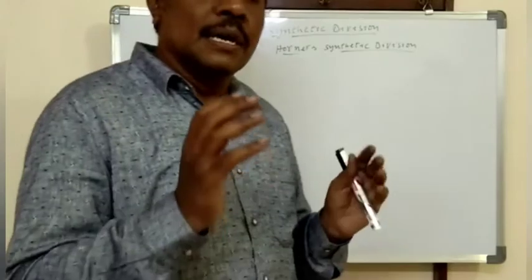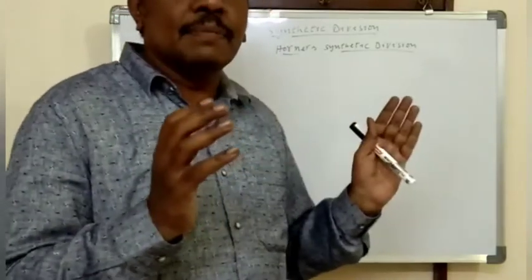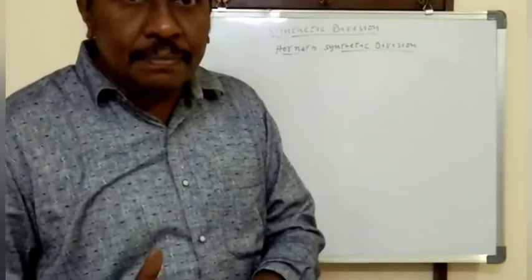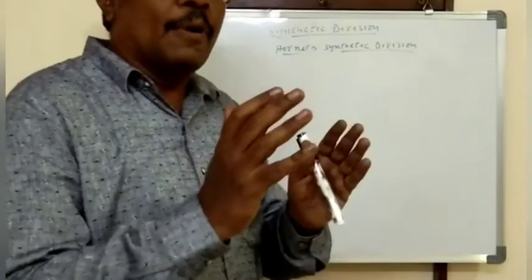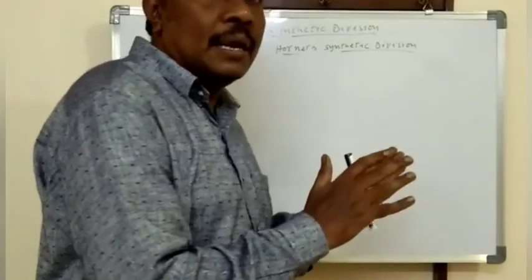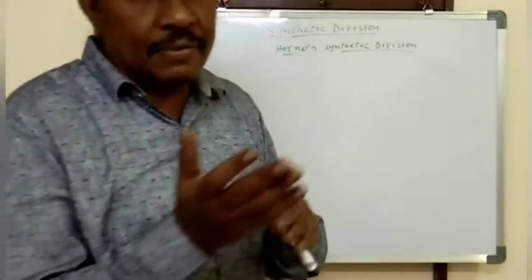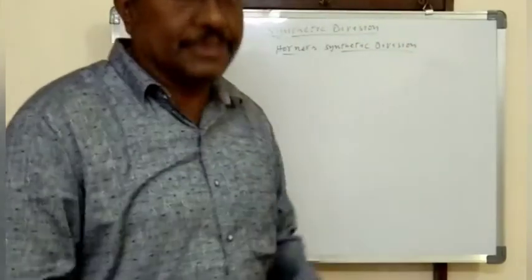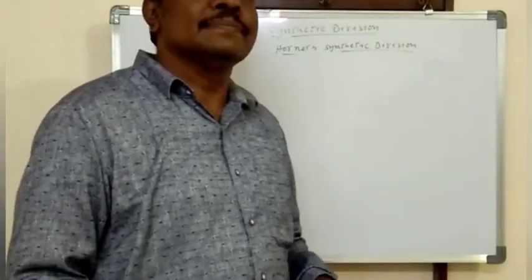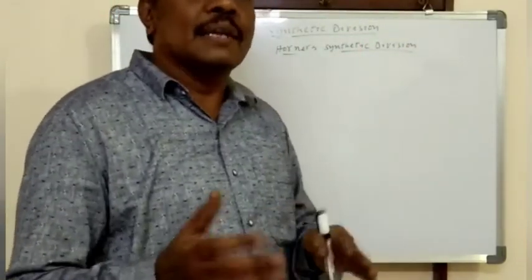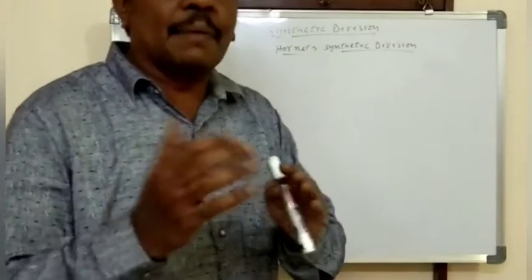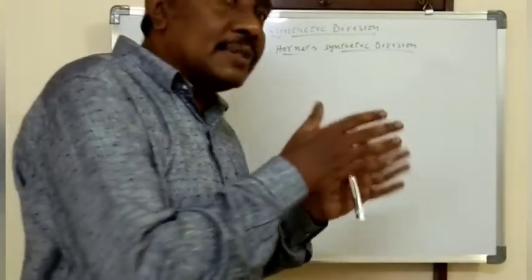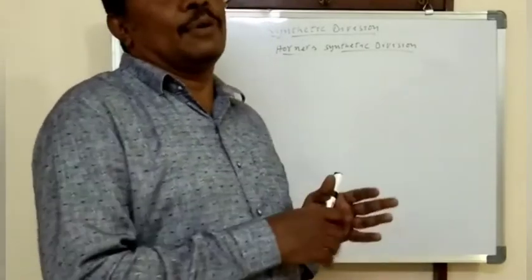This method is also used to find the quotient and remainder for a polynomial when divided by another polynomial, in an easy way — that means without performing any actual division. We can find the quotient and remainder for a polynomial divided by any other polynomial.